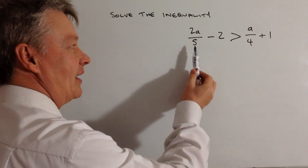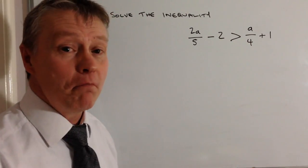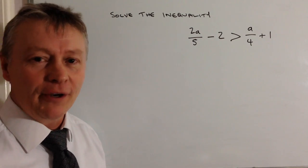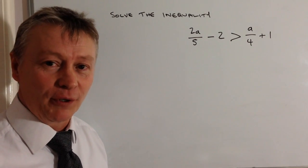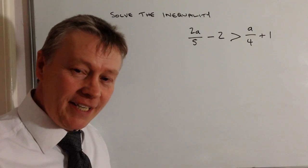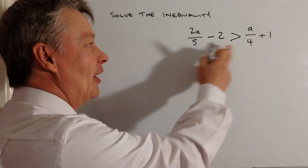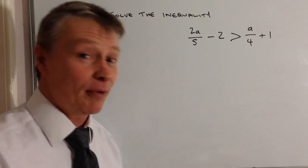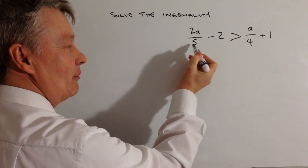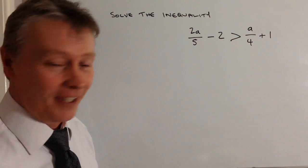In this case I've got a 5 and a 4, so I'm going to multiply through by the lowest common multiple. That makes life easier because I can get rid of the denominators. The lowest common multiple of 5 and 4 is 20.